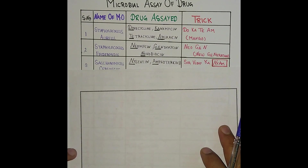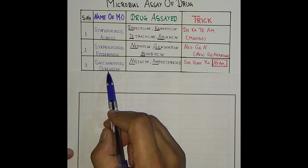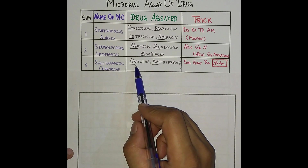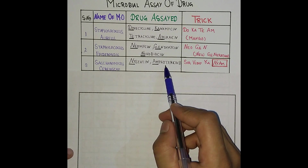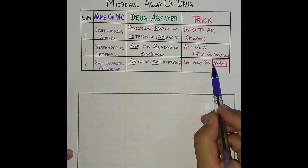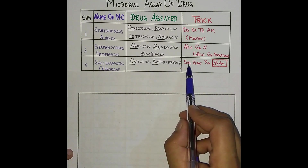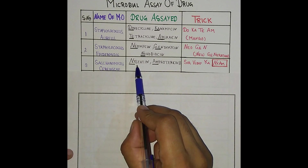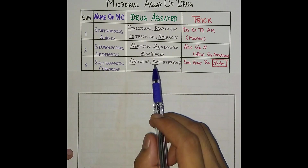The next one is Saccharomyces cerevisiae, and the drugs are Nystatin and Amphotericin B. The trick is 'Sir Vijay ka niyam' — 'cerevisiae' for Sir, 'niyam' (rule) for Nystatin, and AM for Amphotericin B.